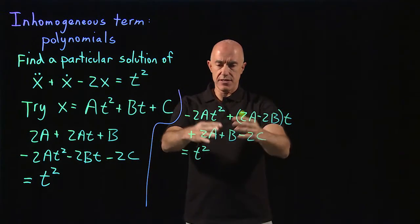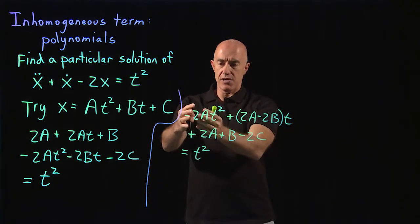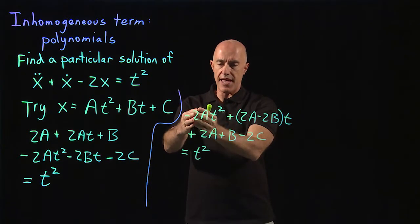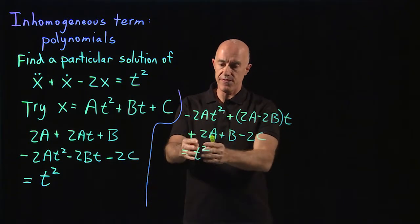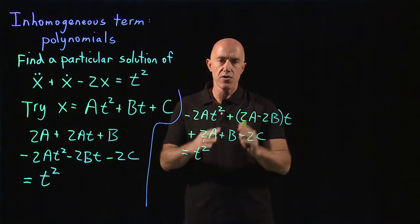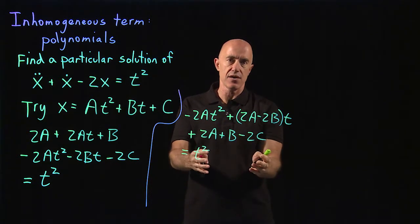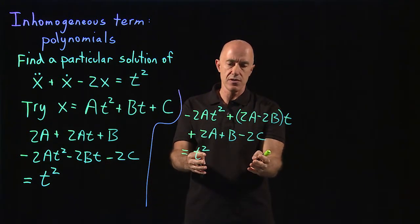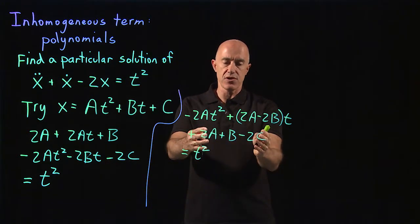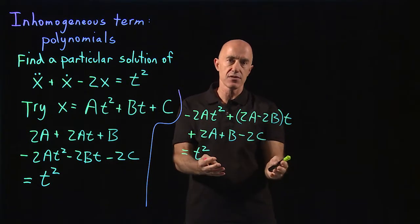Now the idea is the coefficient of t squared on the left has to equal the coefficient of t squared on the right. The coefficient of t on the left has to equal the coefficient of t on the right. Here it's zero. And the constant term on the left has to equal the constant term on the right.